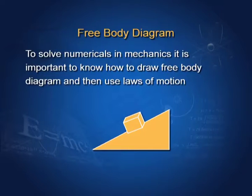Free body diagram. To solve numericals in mechanics, it is important to know how to draw a free body diagram. Let there be a body of mass M kept on an inclined plane. Weight Mg acts in the vertically downward direction. Force of friction acts upward if the body tends to slide downward. Normal reaction R acts upward perpendicular to the plane. Resolving Mg into components: Mg sin theta parallel to the plane downward, and Mg cos theta perpendicular to the plane. At equilibrium, Mg sin theta equals friction force F, and Mg cos theta equals normal reaction R.